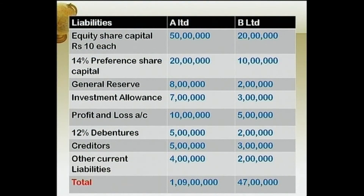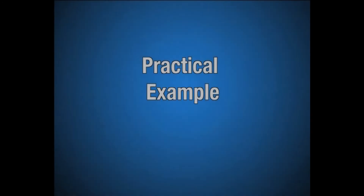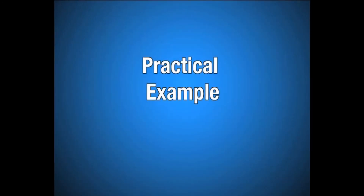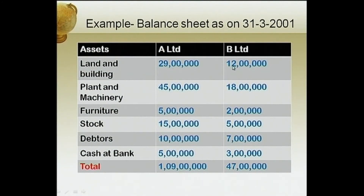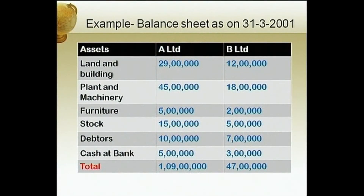P&L account: Rs. 10 lakh and Rs. 5 lakh. 12% debentures: Rs. 5 lakh and Rs. 2 lakh for A Limited and B Limited respectively. Creditors: Rs. 5 lakh and Rs. 3 lakh. Other current liabilities: Rs. 4 lakh and Rs. 2 lakh. Total liabilities of A Limited: Rs. 1 crore 9 lakh; B Limited: Rs. 47 lakh. On the asset side: land and building Rs. 29 lakh and Rs. 12 lakh; plant and machinery Rs. 45 lakh and Rs. 18 lakh; furniture Rs. 5 lakh and Rs. 2 lakh; stock Rs. 15 lakh and Rs. 5 lakh; debtors Rs. 10 lakh and Rs. 7 lakh; cash at bank Rs. 5 lakh and Rs. 3 lakh. Totals match at Rs. 1 crore 9 lakh and Rs. 47 lakh.